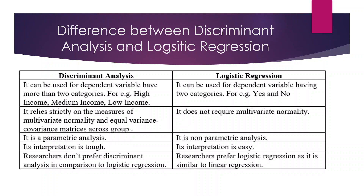The difference between discriminant analysis and logistic regression is that in logistic regression the dependent variable can only have two categories — yes/no, urban/rural, male/female — while discriminant analysis can handle more than two categories, such as high income, medium income, and low income. Discriminant analysis strictly follows the assumption of multivariate normality and equal variances, while logistic regression does not require multivariate normality. Discriminant analysis is parametric; logistic regression is non-parametric. Interpretation of discriminant analysis is tough whereas logistic regression is easier, and researchers prefer logistic regression as it forms an equation similar to linear regression.